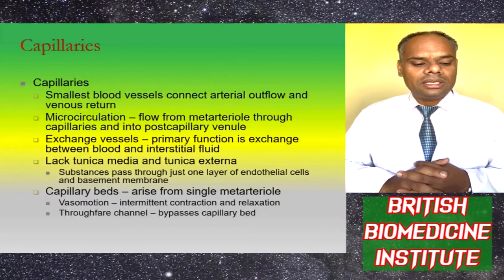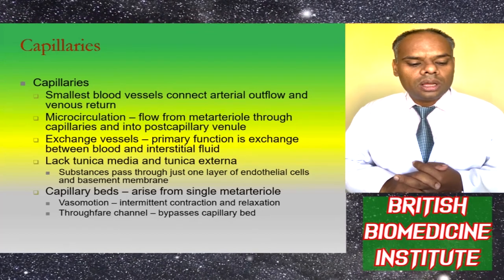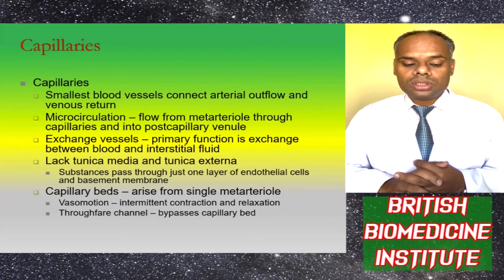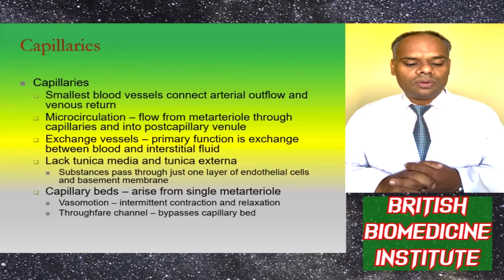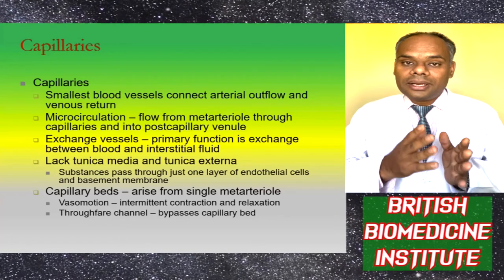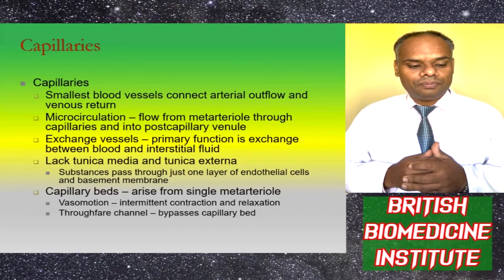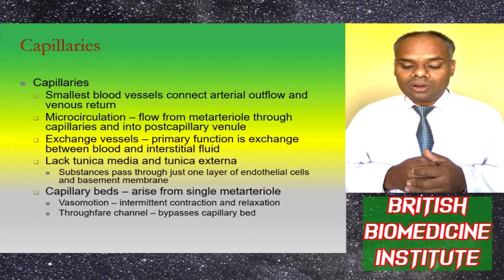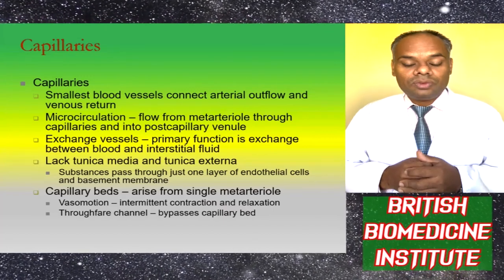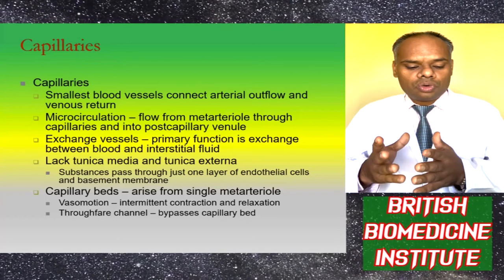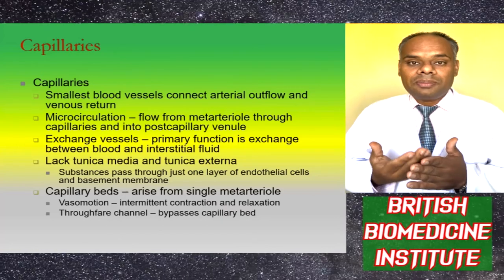Capillaries are the smallest blood vessels, connecting arterial overflow and venous return. Microcirculation flows from meta-arterioles through capillaries and into post-capillary venules. Their primary function is exchange between blood and interstitial fluids. Substances pass through just one layer of endothelial cells and a basement membrane. Capillary beds arise from a single meta-arteriole, with vasomotion — intermittent contraction and relaxation — and thoroughfare channels that can bypass the capillary bed.